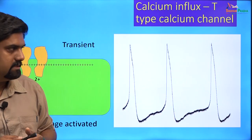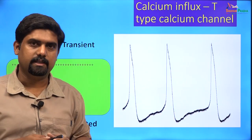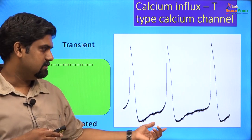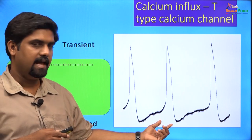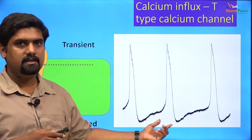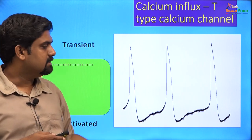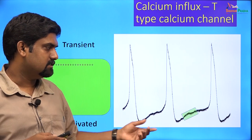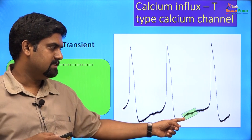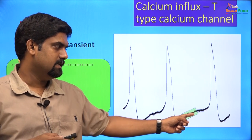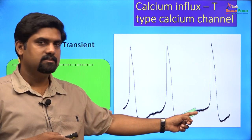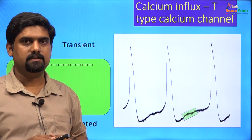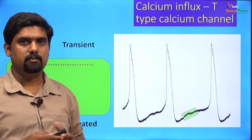These calcium channels are present on the SA node and are responsible for calcium entry during the early phase of the diastolic depolarization of the pacemaker potential.